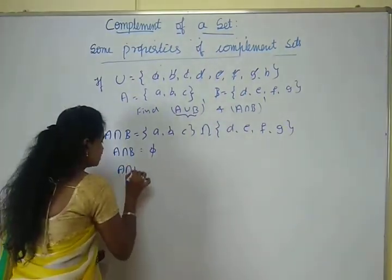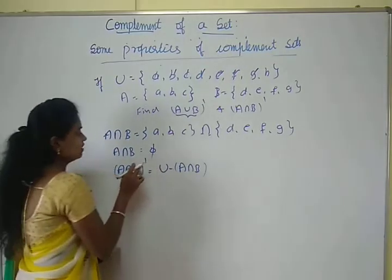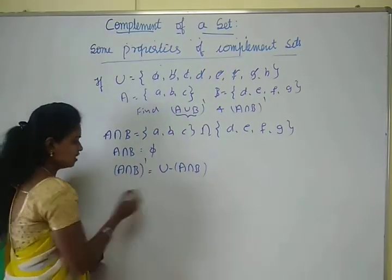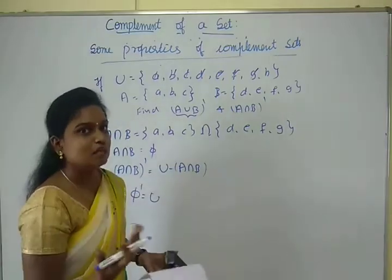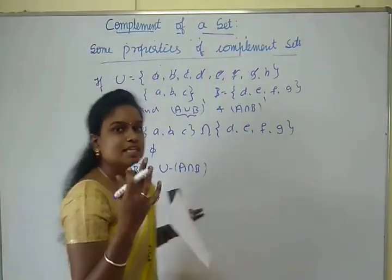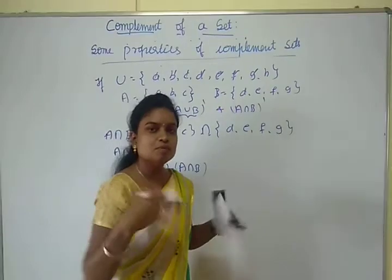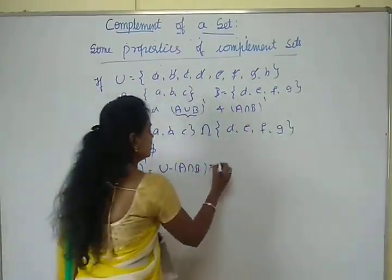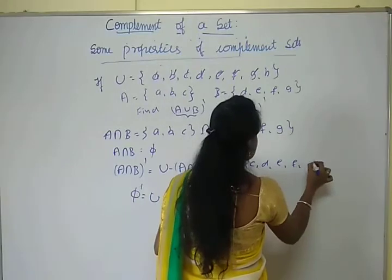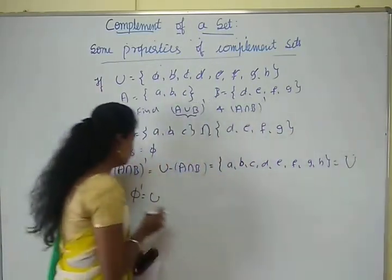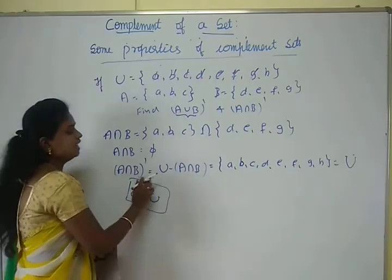So A intersection B whole dash means we have to find the complement of the empty set. We know the property: complement of the empty set is equal to the universal set. So A intersection B whole dash is {A, B, C, D, E, F, G, H}, which is nothing but the universal set U. This uses the property that the complement of the empty set equals the universal set.